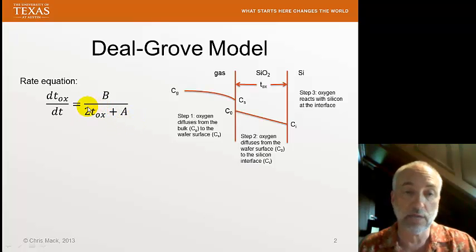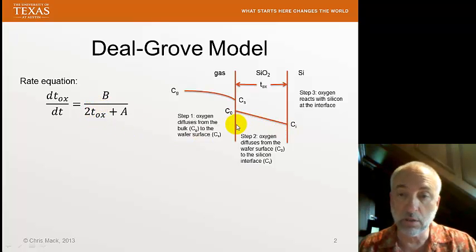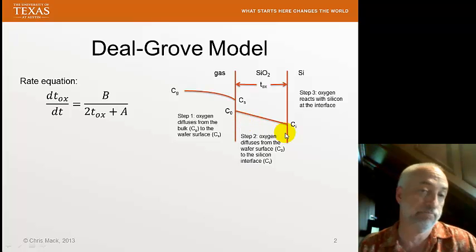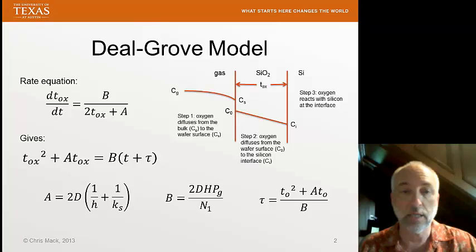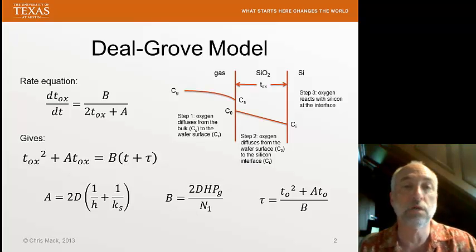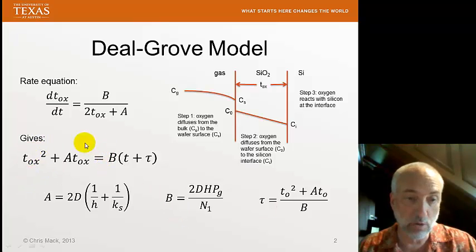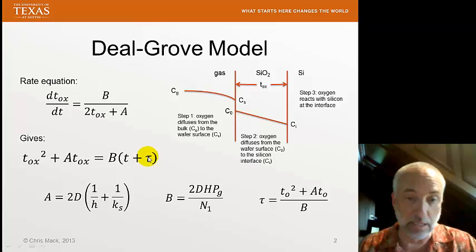The fact that oxide thickness appears in the rate equation is because of the longer time it takes to diffuse through a thicker oxide. We also saw that it was very easy to solve this rate equation by integrating, which gave us our standard form of the Deal-Grove model. It has a second-order term and a first-order term, the two constants A and B, and then we added a third constant, tau.